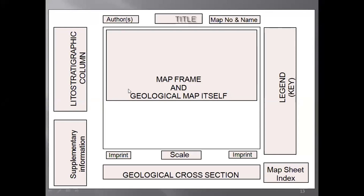If you want to give any supplementary information that is not given in the map but you think it is useful, you can put it in a corner. You also need to represent the scale — either a numeric scale or a graphical scale. For example, if you want to represent the city of Sargodha, you cannot have a sheet of two kilometers, so you need to define that one centimeter on the map is equal to one kilometer on the ground.